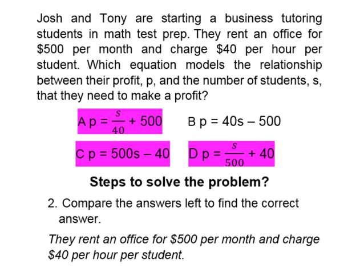We can cross out answer choice C. Why is that? Well, the $500 per month is rent for the office, and Josh and Tony charge $40 per hour per student, so it should be 40S minus 500 — not 500S minus 40.